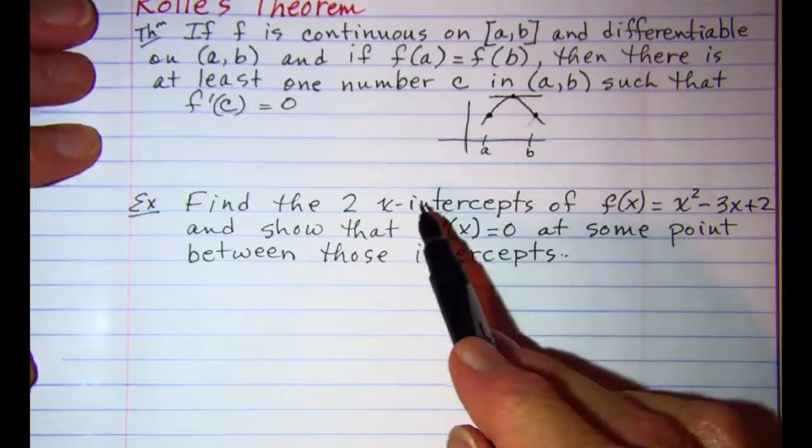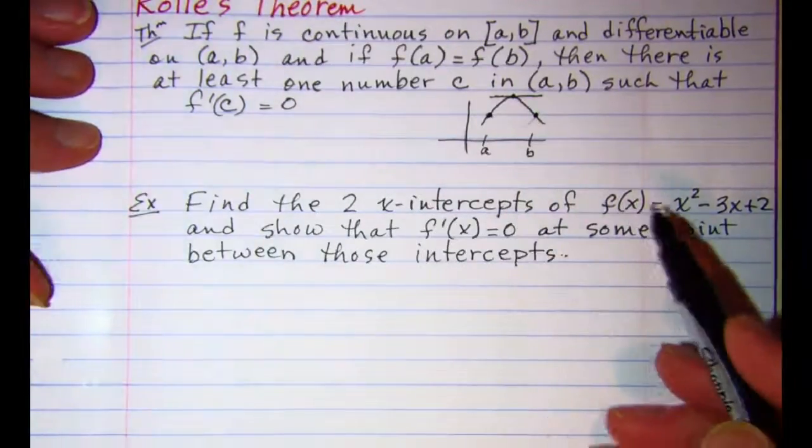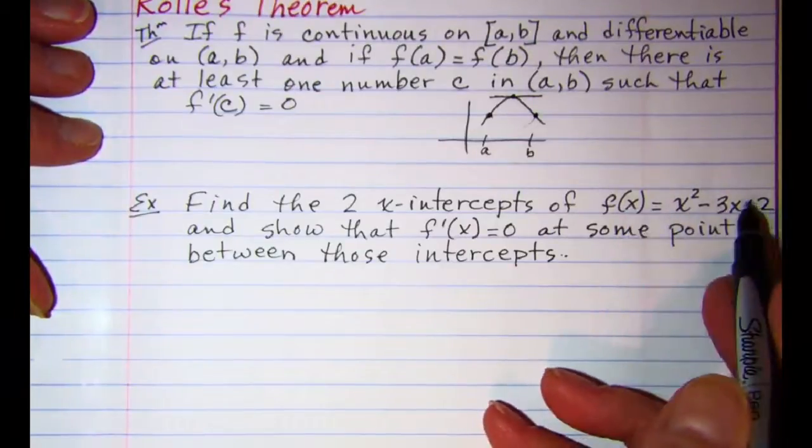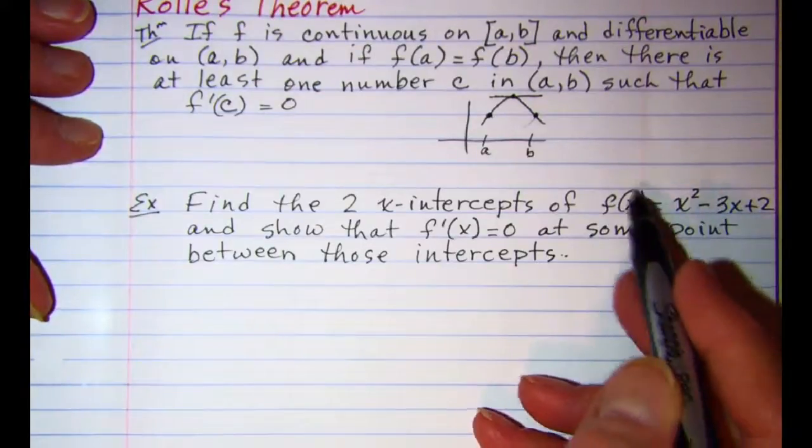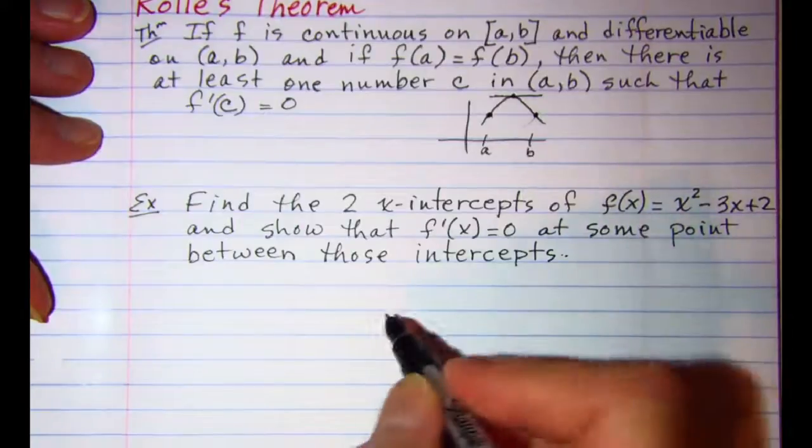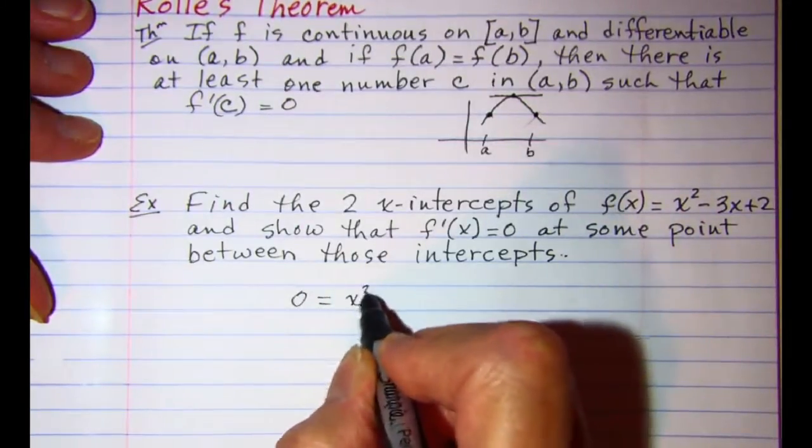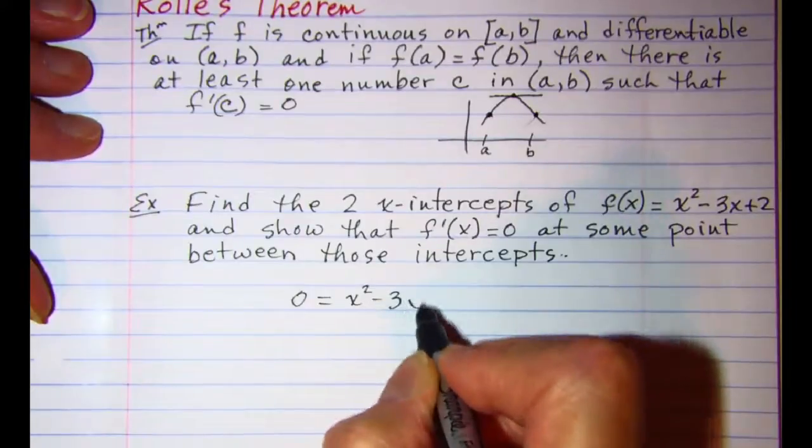So to find our x-intercepts remember we let y equals 0 so we'll take our function and we'll replace f of x with 0 and we'll have 0 is equal to x squared minus 3x plus 2.